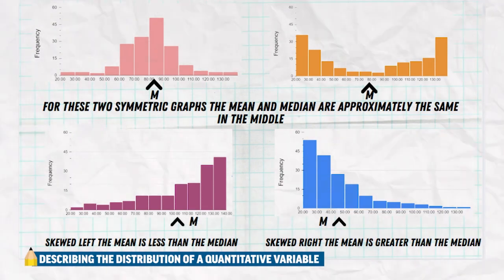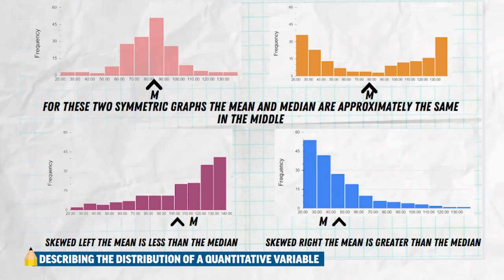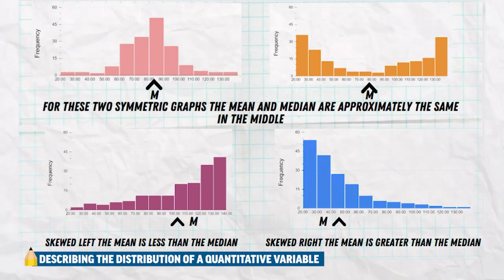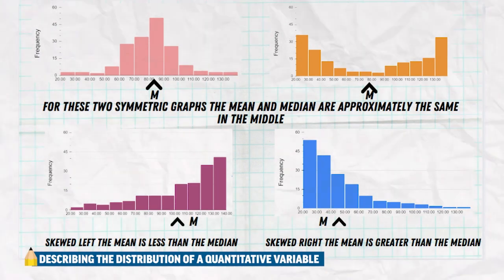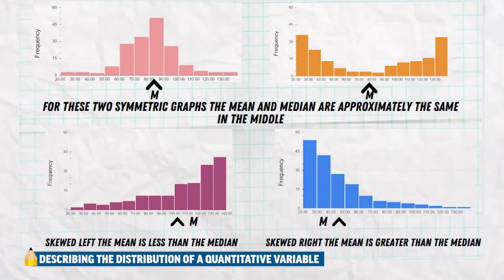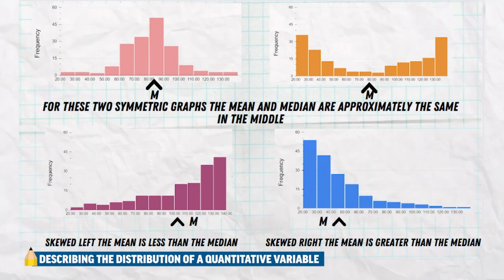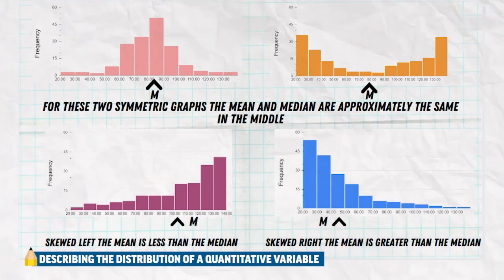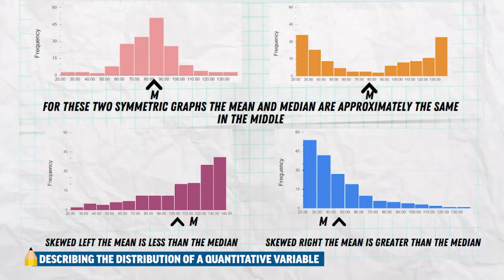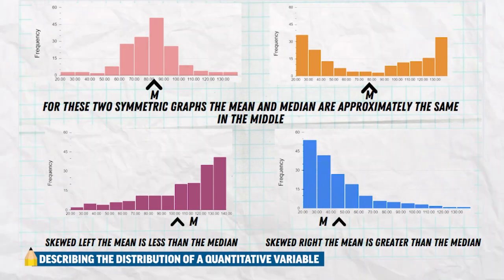The official symbol for the mean of a sample is X-bar — it's X with a little bar over top of it. We don't really have any official symbol for the median; we just use an M or write out the word median.